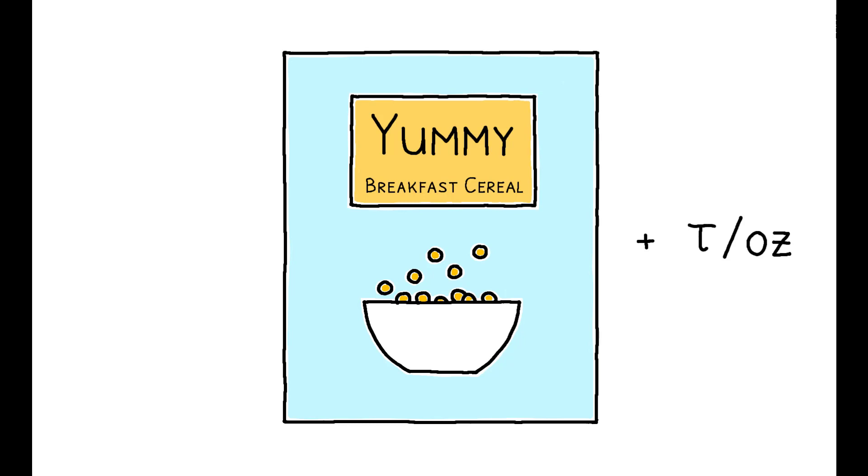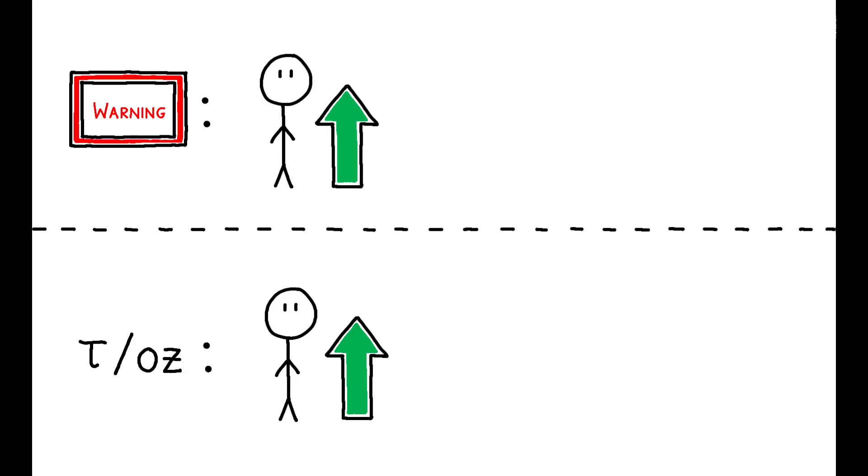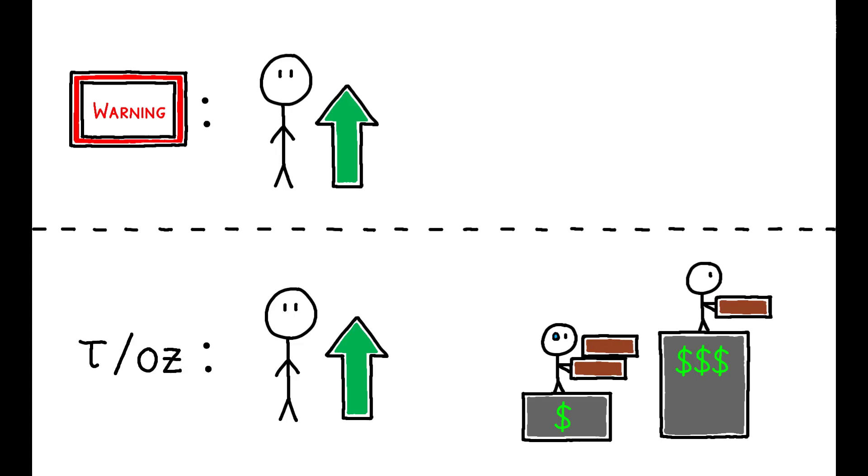The paper shows that while taxes and labels can generate similar gains in consumer welfare, taxes can be regressive if they disproportionately increase the price of unhealthy products that are more widely consumed by poorer households.